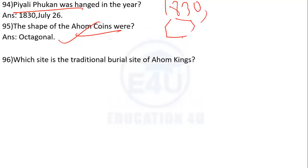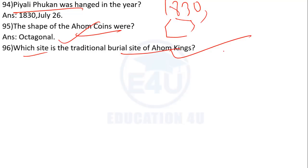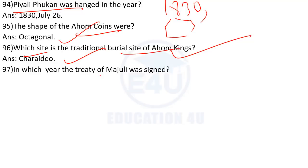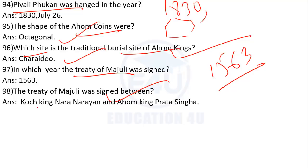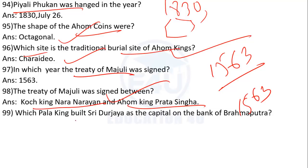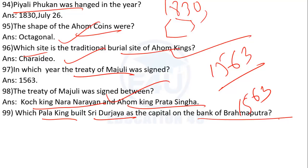Which site is the traditional burial site of Ahom kings? In which treaty was Majuli mentioned? Which king built Shri Dorjaya as the capital on the bank of river Brahmaputra?